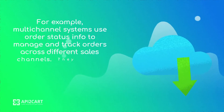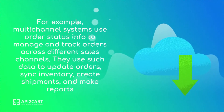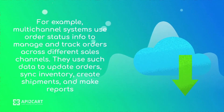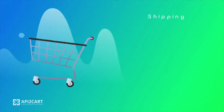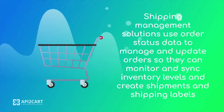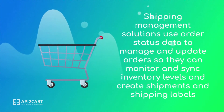For example, multi-channel systems use order status info to manage and track orders across different sales channels. They use such data to update orders, sync inventory, create shipments, and make reports. Shipping management solutions use order status data to manage and update orders so they can monitor and sync inventory levels and create shipments and shipping labels.